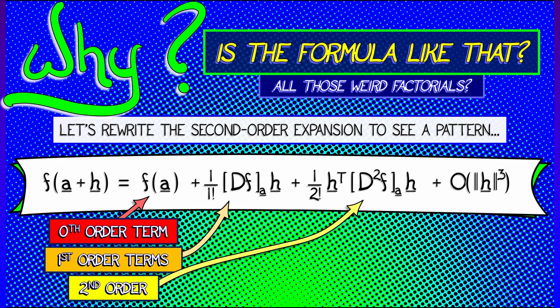So I got a function f. I'm at an input a. Let's add a perturbation term h to it. Then f of a plus h is f of a, the zeroth order term, plus the derivative of f of a times h using matrix vector multiplication, and then divided by one factorial.